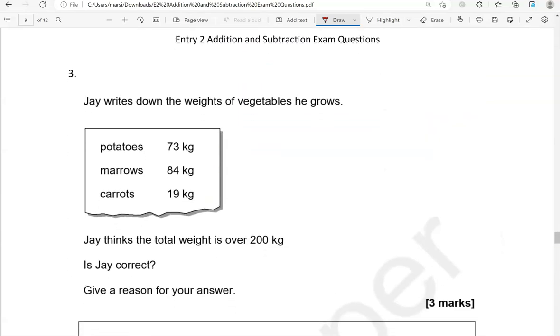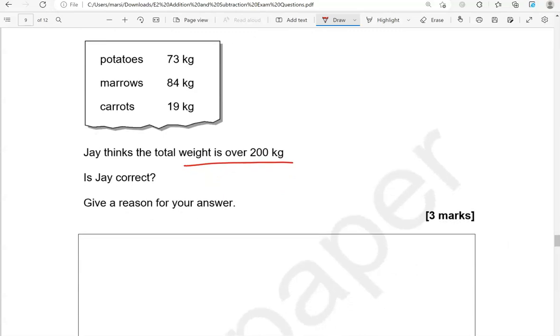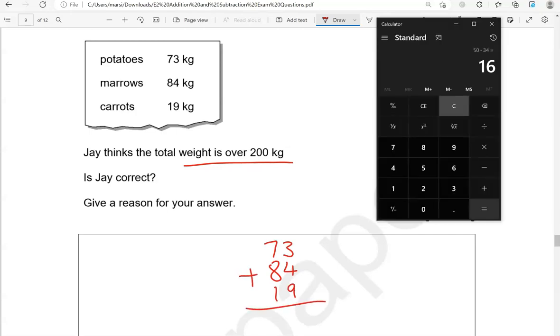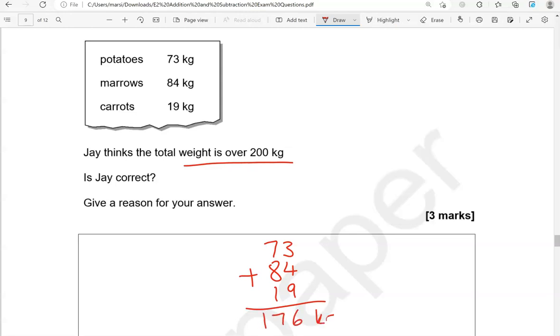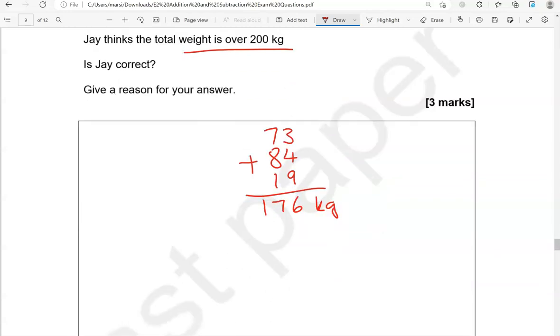Jay writes down the weights of vegetables he grows. Potatoes, 73 kilograms. Marrows, 84 kilograms. Carrots, 19 kilograms. Jay thinks the total weight is over 200 kilograms. Is Jay correct? Give a reason for your answer. So to work out the total weight of the vegetables, we're going to add 73 and 84 and 19, which gives us 176 kilograms. And that is less than 200, so Jay is not correct. So we're going to say no, he is not correct.